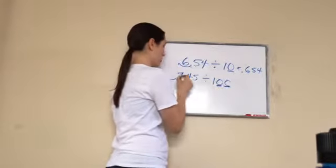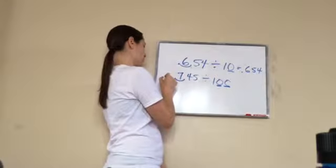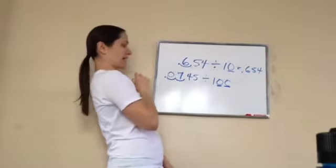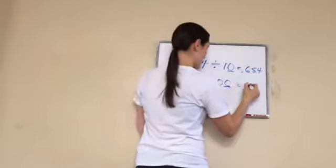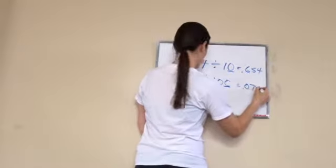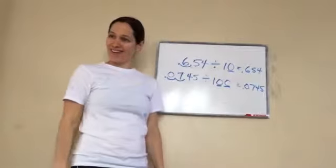Because there's two, 1, 2. We had to go 1, 2. Point goes here. We had to add a zero to help us out. The answer was 0.745. Isn't that cool? Yeah.